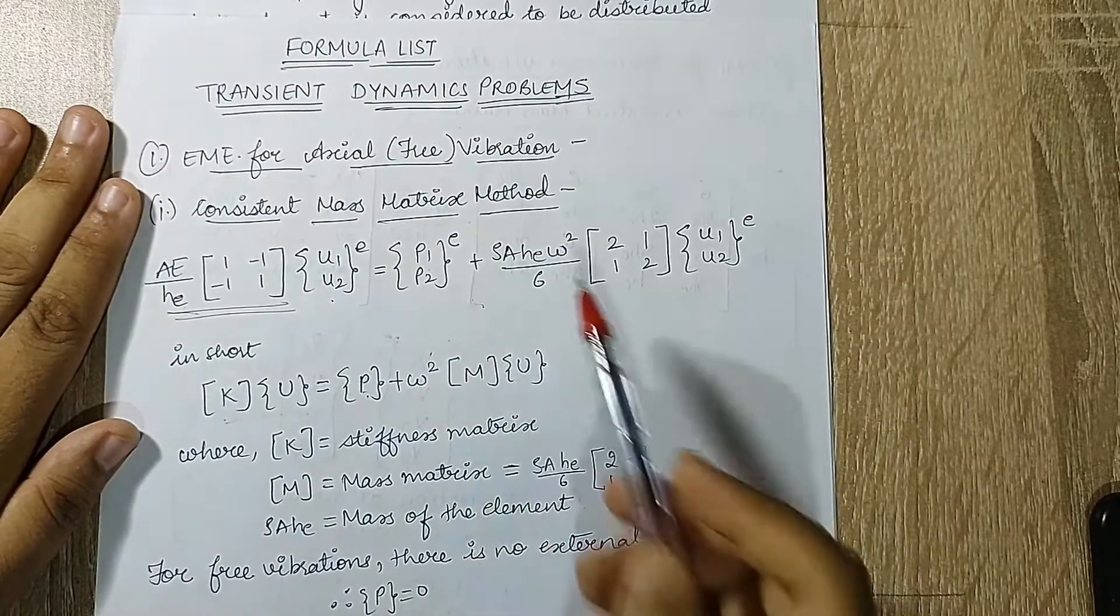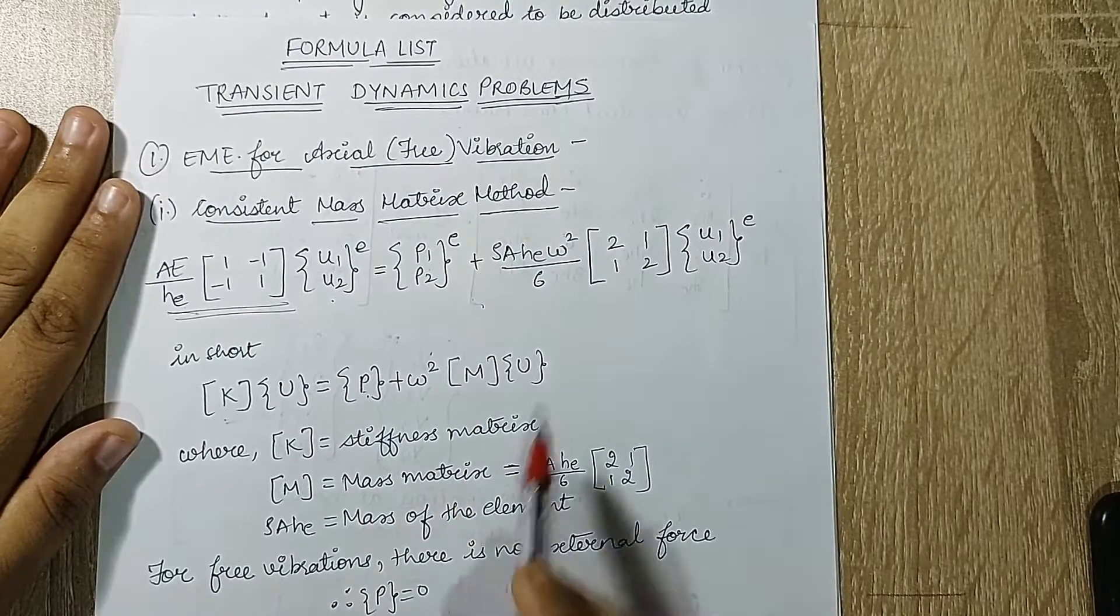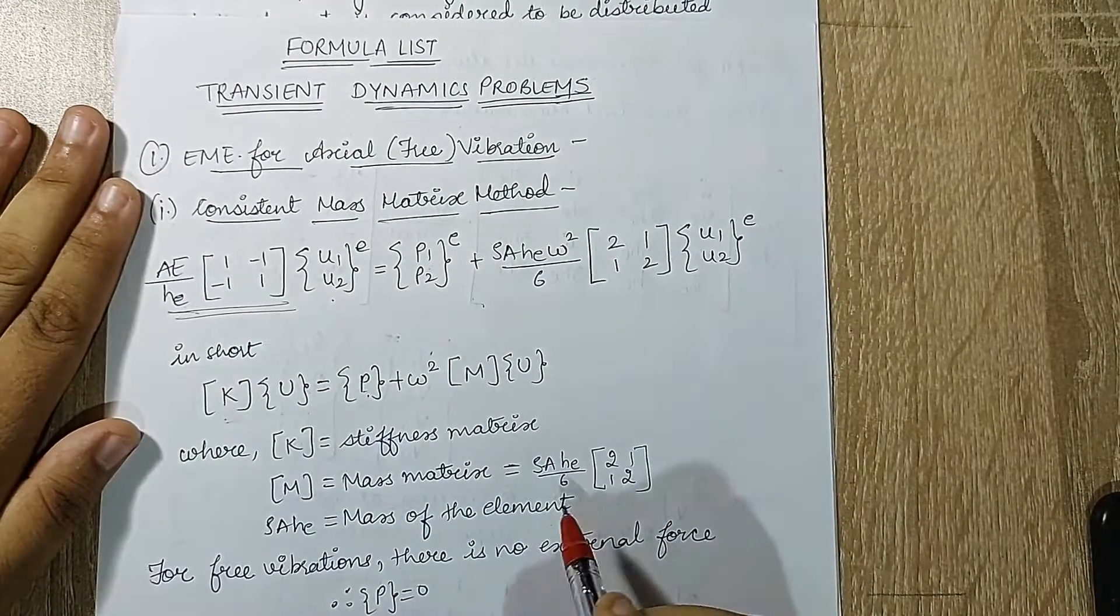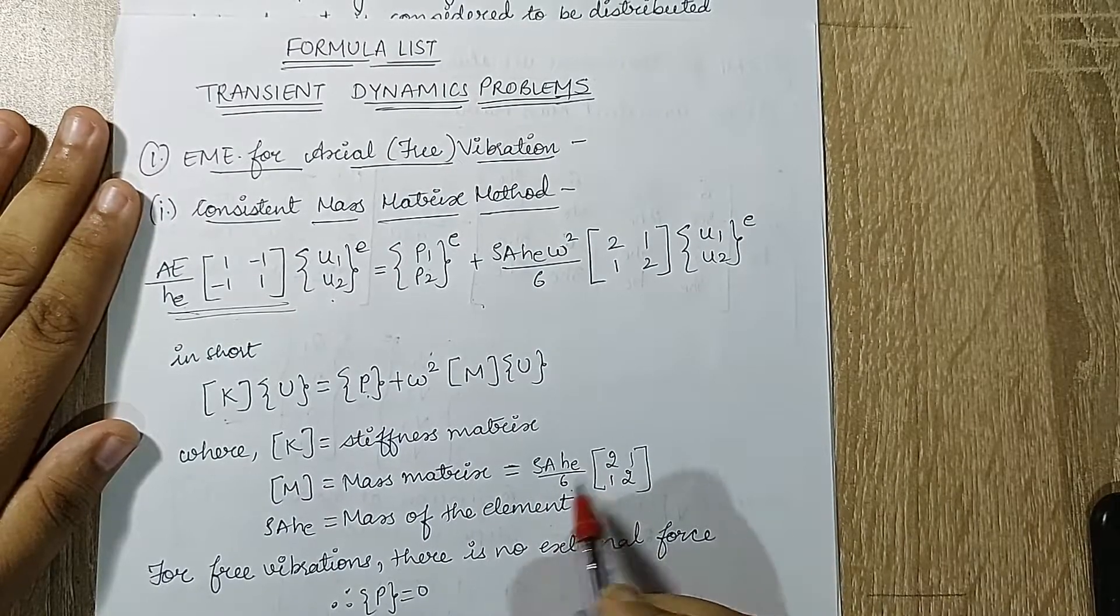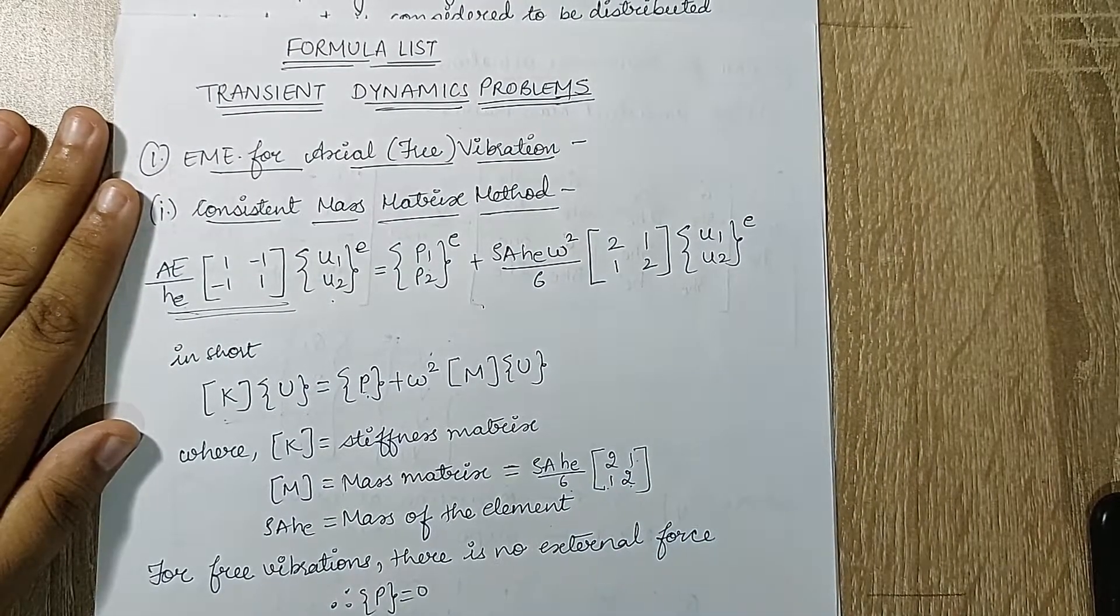Here P is my lower matrix and omega square is the frequency of vibration of the body. Rest of the terms that you see are a part of mass matrix. So mass matrix here for consistent mass matrix method is rho A HE upon 6 [2, 1; 1, 2] and this is displacement matrix which you already know.